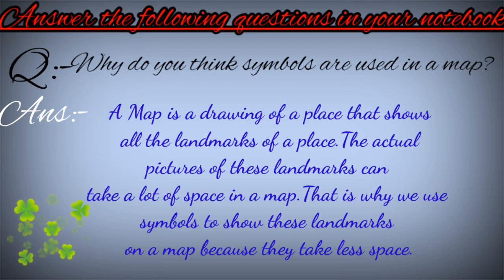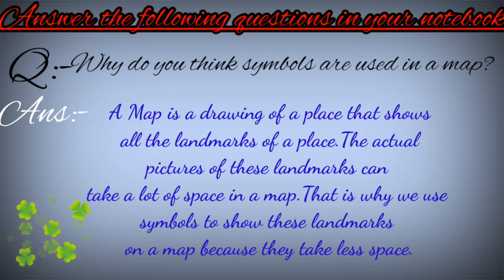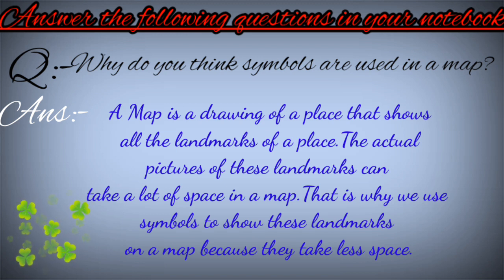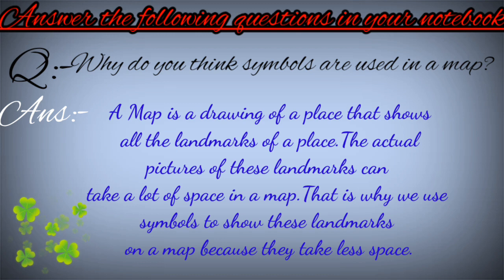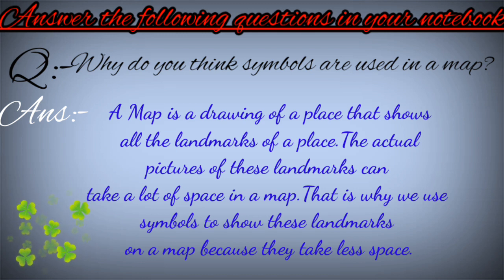The answer is: a map is a drawing of a place that shows all the landmarks of a place. The actual pictures of these landmarks can take a lot of space in a map. That is why we use symbols to show these landmarks on a map, because they take less space.